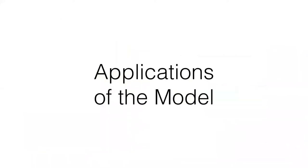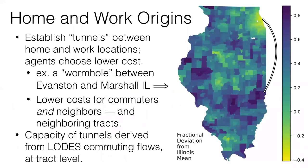One specific application is incorporating home and work origins, which hasn't been possible for FCA methods. We establish tunnels between the home origin and work location, and if work is cheaper people switch demand there. To illustrate, I use the wormhole between Evanston — where Northwestern is — and Marshall, Illinois. As the tunnel is turned on, the cost in Marshall corresponds to the cost in Evanston, and costs around Marshall also drop because demand is effectively removed from that location.